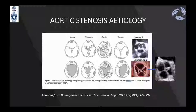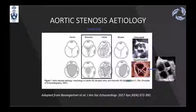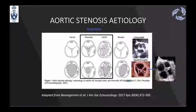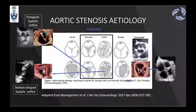Aortic stenosis etiology: there are different etiologies causing aortic stenosis. The most common is calcification of the aortic valve. Congenital causes — most frequently bicuspid — also occur. Rheumatic disease of the aortic valve is less frequent in North America. The acquired type is divided into rheumatic and calcified. In rheumatic AS, look for a triangular systolic orifice on opening; in calcified valves, look for a stellate-shaped systolic orifice.